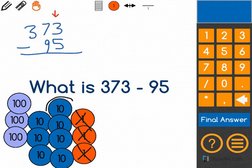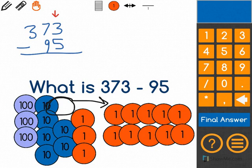I'm going to change this 10 for 10 ones and then I can subtract. Now I can take away 5: 1, 2, 3, 4, 5.